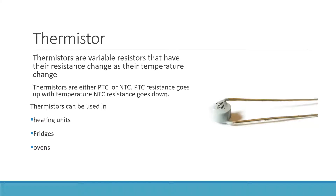A thermistor is a variable resistor whose resistance changes as its temperature changes. Thermistors are either PTC (positive temperature coefficient) or NTC (negative temperature coefficient). You don't really need to memorize what those stand for, but just so you know: a PTC thermistor's resistance goes up with temperature, while an NTC thermistor's resistance goes down with temperature.